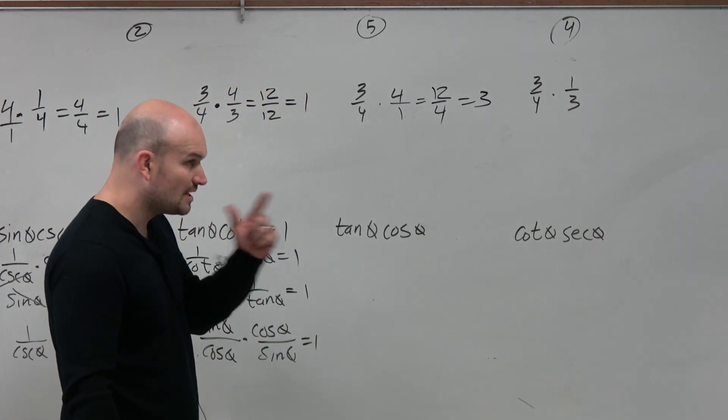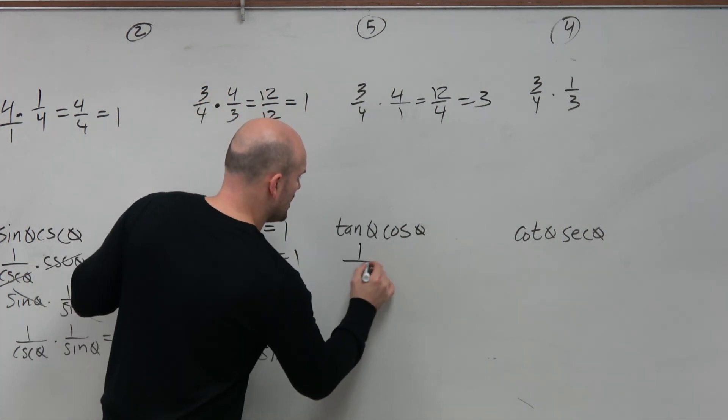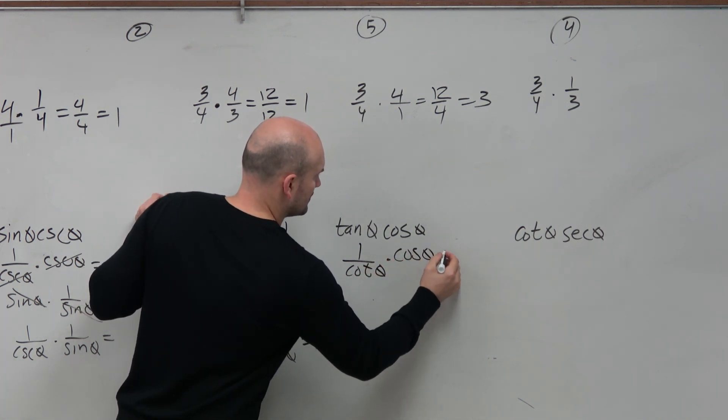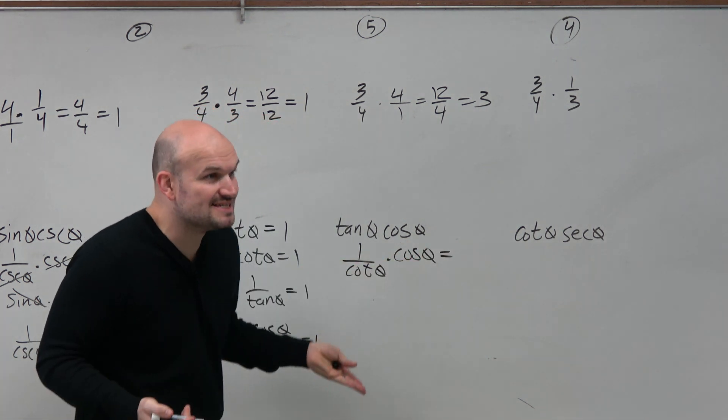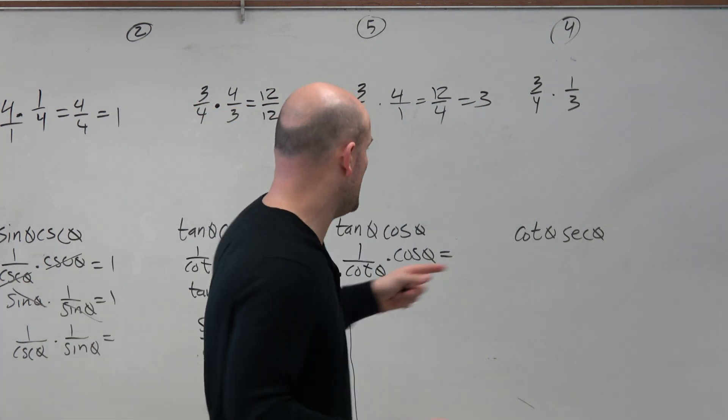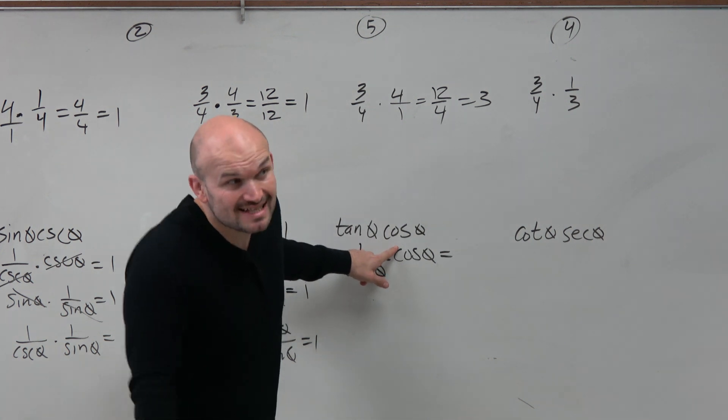So here, a lot of people get stuck because they say, why don't I rewrite cotangent here and then cosine? The problem is nothing divides out, does it? So that's not really going to help us. And if I rewrite cosine as 1 over secant, that's not really going to help us.